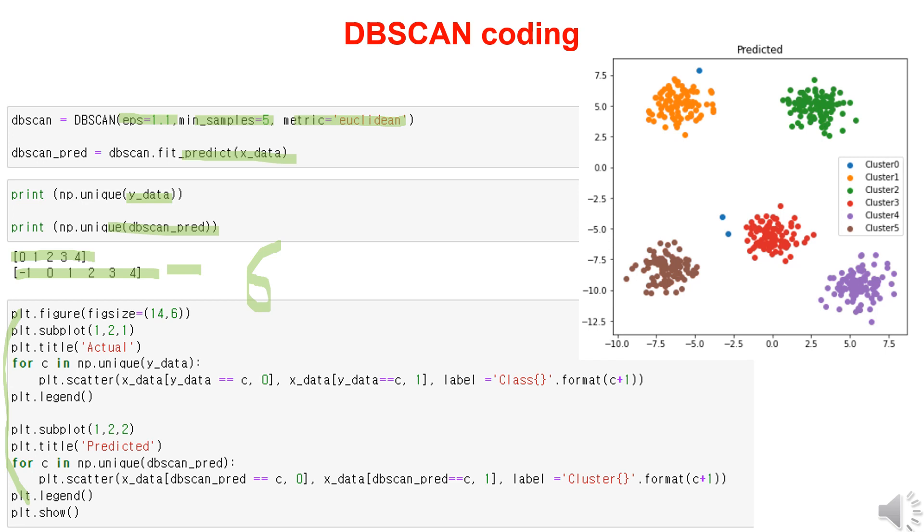When running DBSCAN, we can observe clustering into 5 groups: orange, brown, red, green, and purple. Notably, some points are marked in blue, indicating that they are considered noise and not part of any cluster. Essentially, DBSCAN is density-based, so points that are far from high-density areas are classified as noise. Conversely, if you refer to the previous video on k-means clustering, you'll notice these points were included in the red or orange cluster.